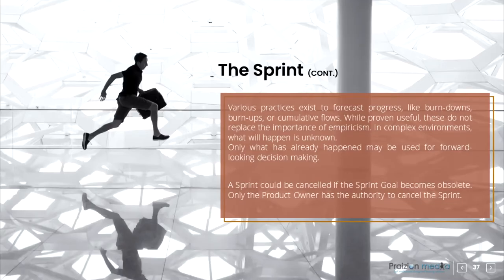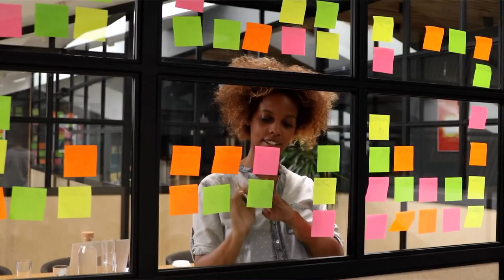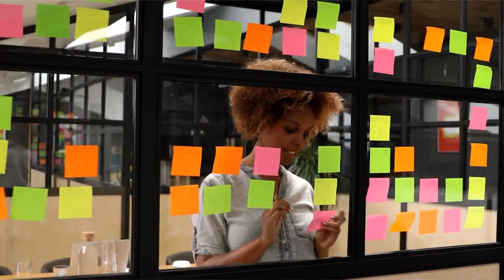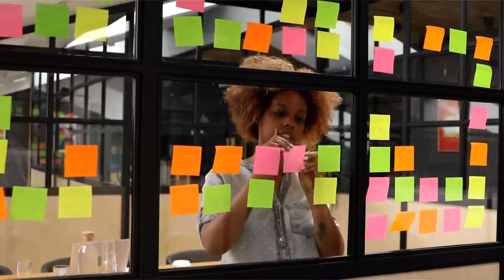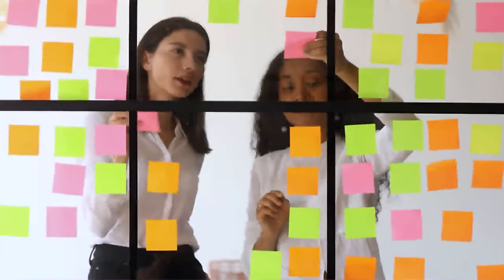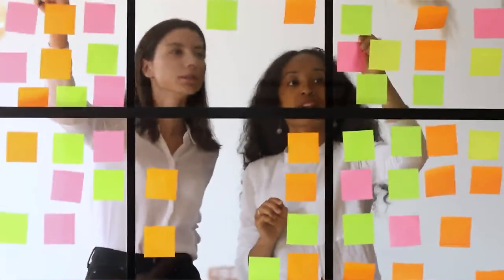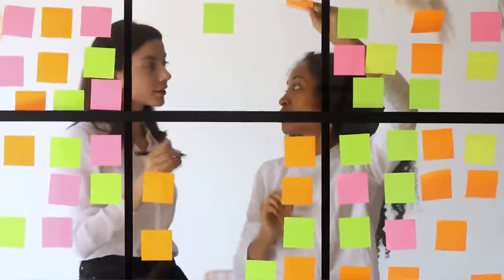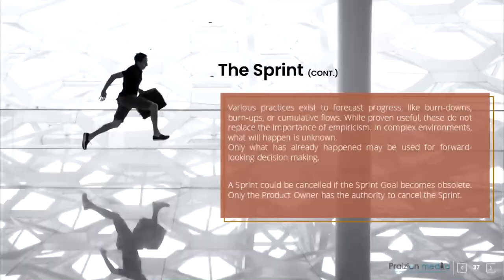Various practices exist to forecast progress like burndowns, burnups, or cumulative flows. While proven useful, these do not replace the importance of empiricism. In complex environments, what will happen is unknown. Only what has already happened may be used for forward-looking decision-making. A Sprint could be canceled if the Sprint Goal becomes obsolete. Only the Product Owner has the authority to cancel the Sprint.